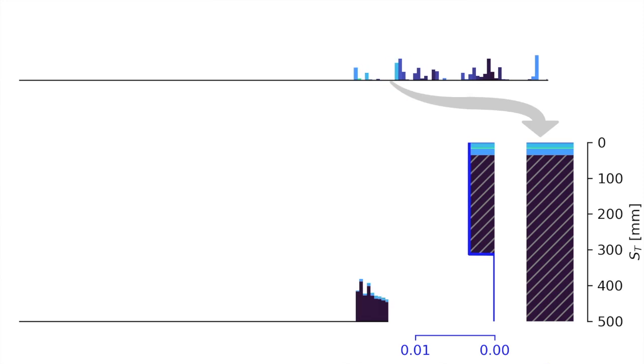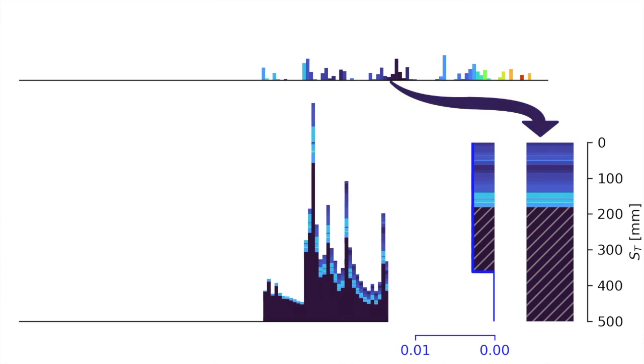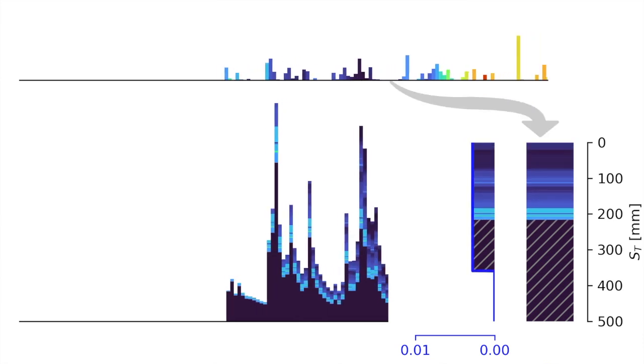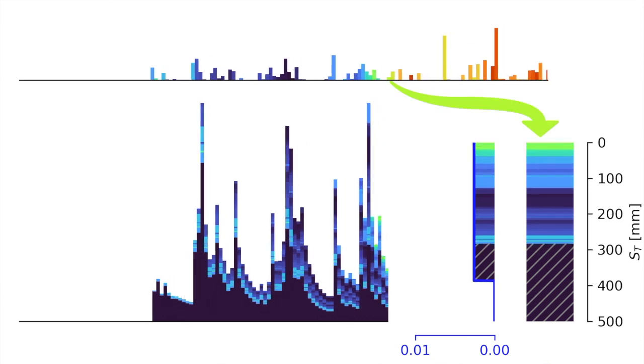Consider a very simple case where the outflows are a representative sample of all of the storage without a preference for younger or older water, as would be the case for a system that's well mixed. This is represented in SAS theory by a uniform SAS function.